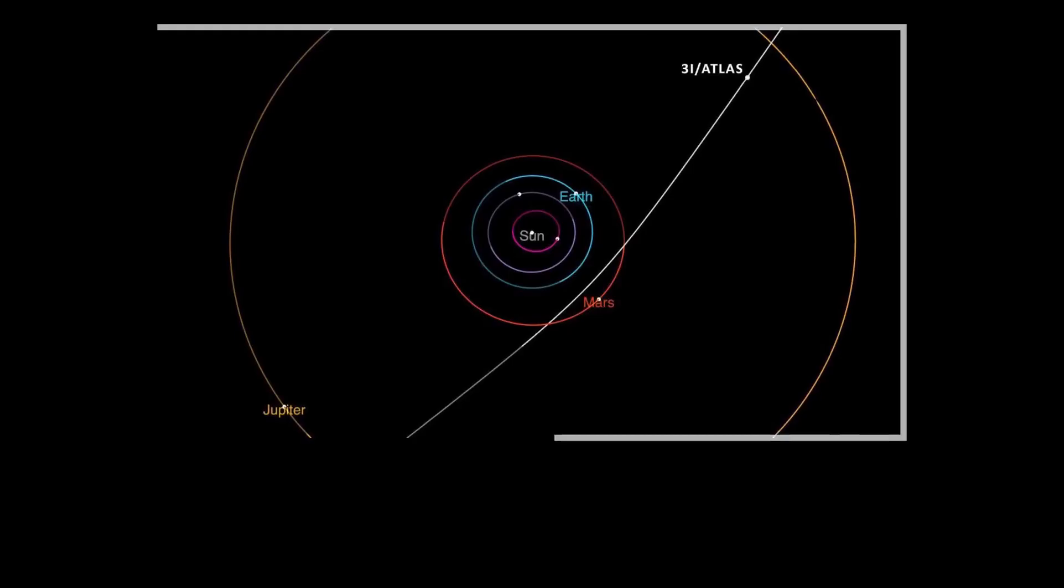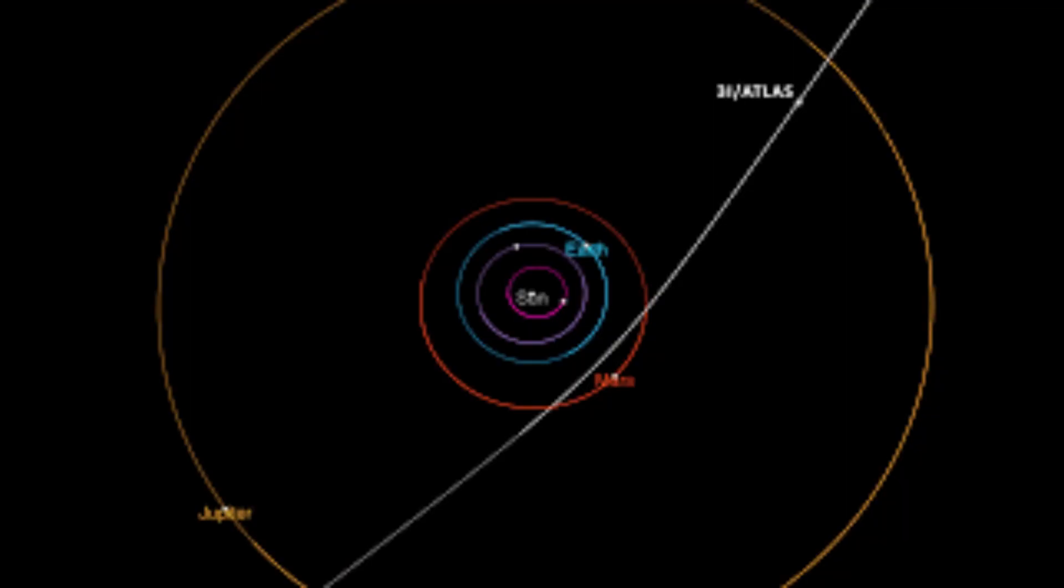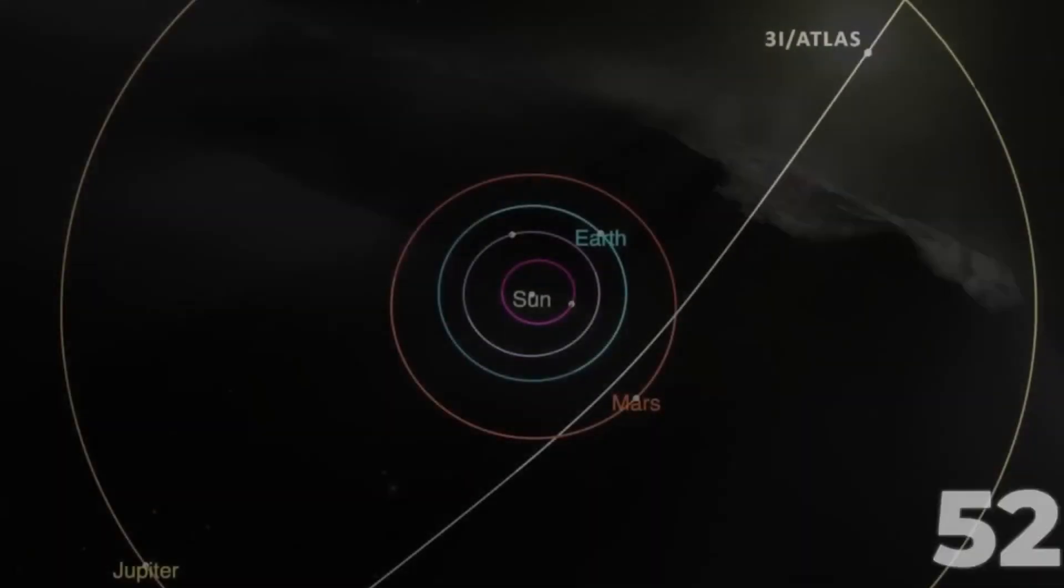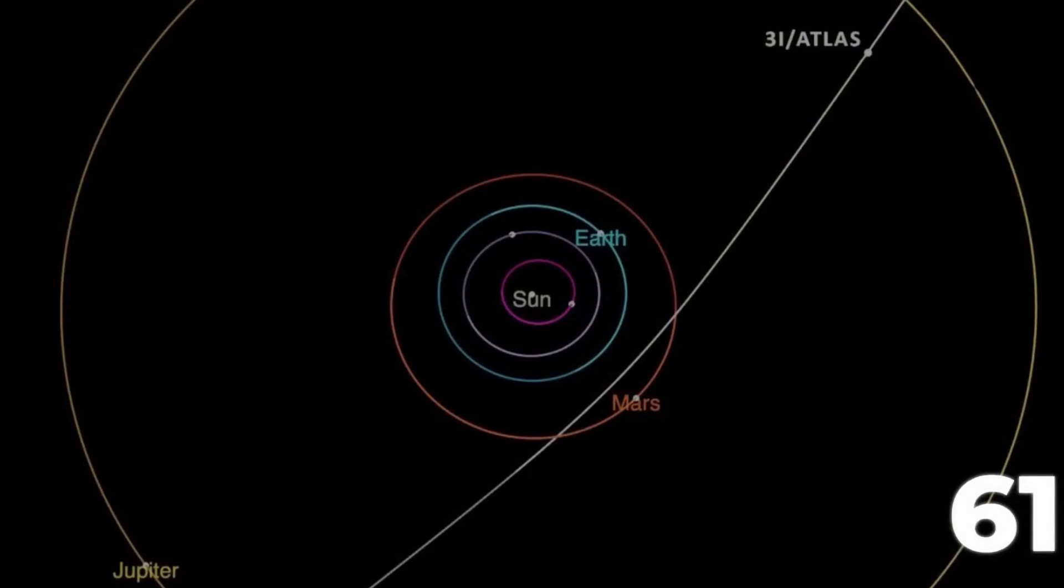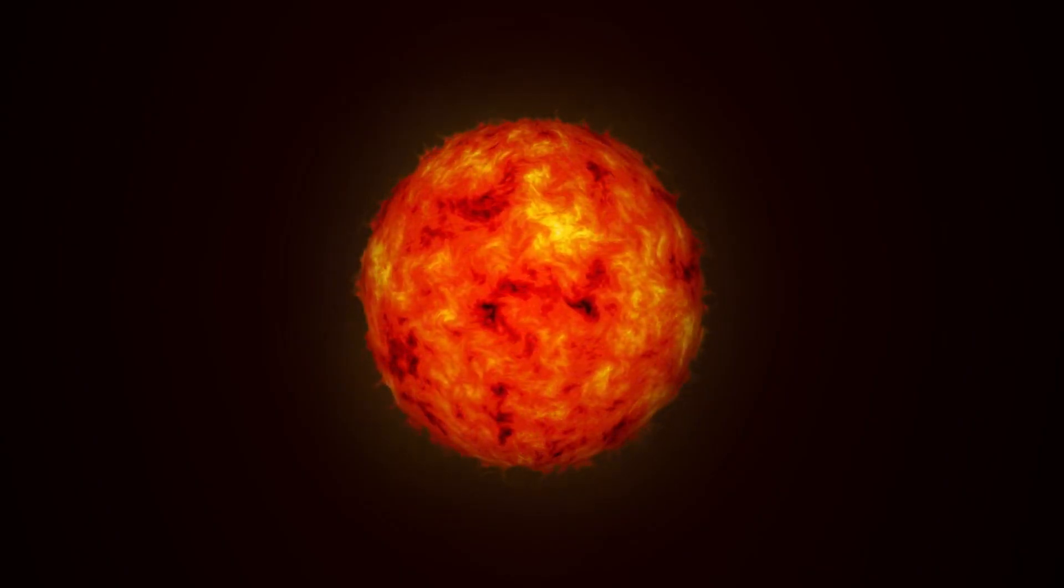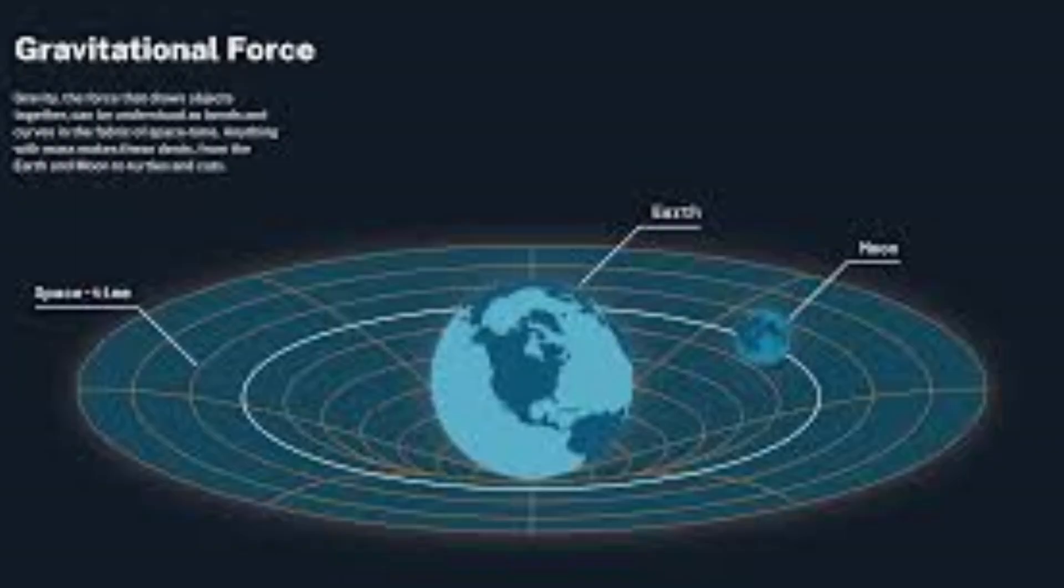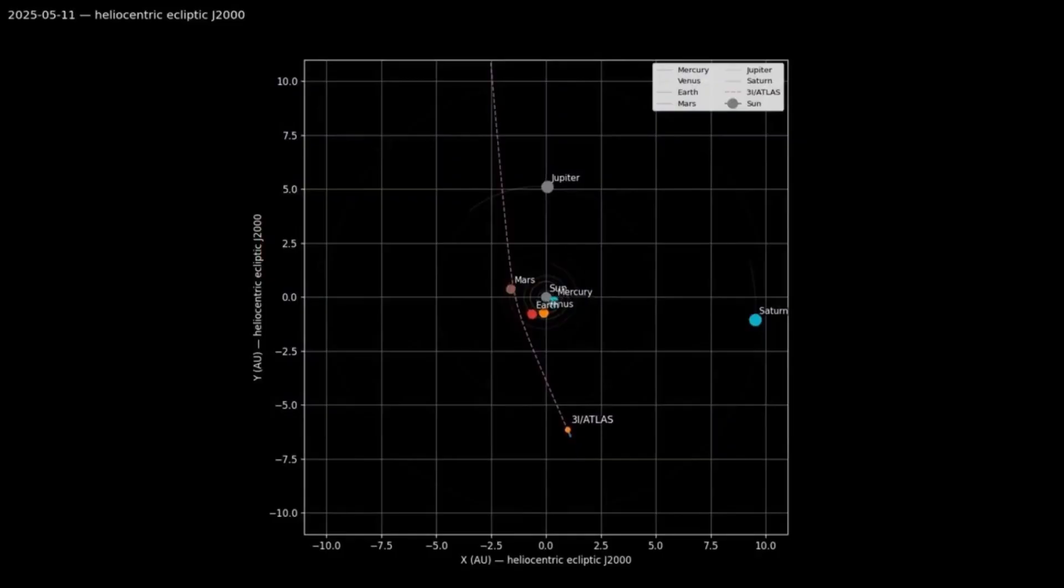For 3I Atlas, the numbers are unambiguous: its orbital eccentricity exceeds 1.0, a mathematical guarantee that it is not a child of our solar system, but a visitor from the deep beyond. It entered our system at nearly 61 kilometers per second—a speed so immense it would punch past the sun's escape velocity even without a gravitational assist.